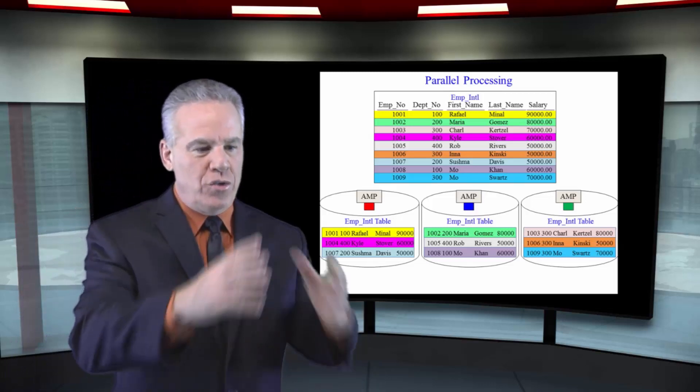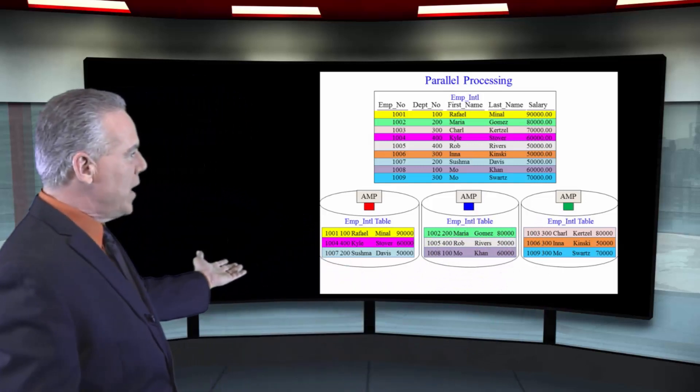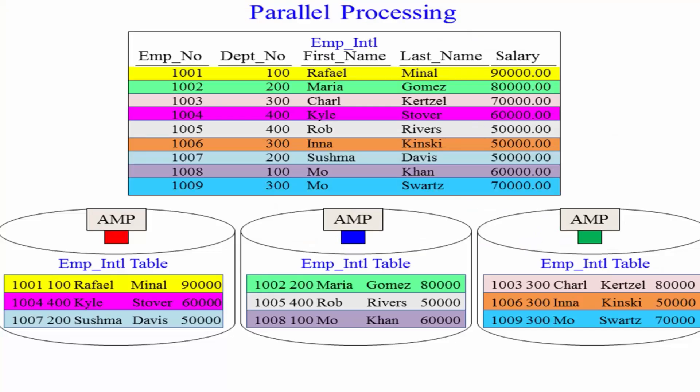But I'm going to show you things small and you just need to have your imagination multiplied by 100. So we've got three AMPs here. As you can see, my table's got nine rows in it. We're going to spread the rows. Three of them on AMP 1, three of them on AMP 2, and three of them on AMP 3.